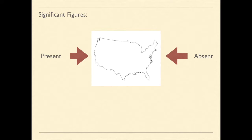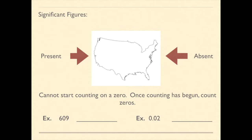Now, one other rule that you need to keep in mind, you cannot start counting on a zero. But once you start counting, you may count zeros. So let's look at a couple of examples to make sure we understand this.